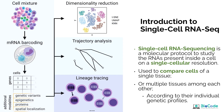Single cell RNA sequencing is a molecular protocol that allows us to study all the RNAs present in a cell at a given moment on a single cellular resolution. It is used to compare cells of a single tissue, and multiple tissues can also be studied using this technique by combining them together, since we are taking RNA from each single cell. If we look at this figure, we can see that there are multiple different types of cells in a cell mixture.